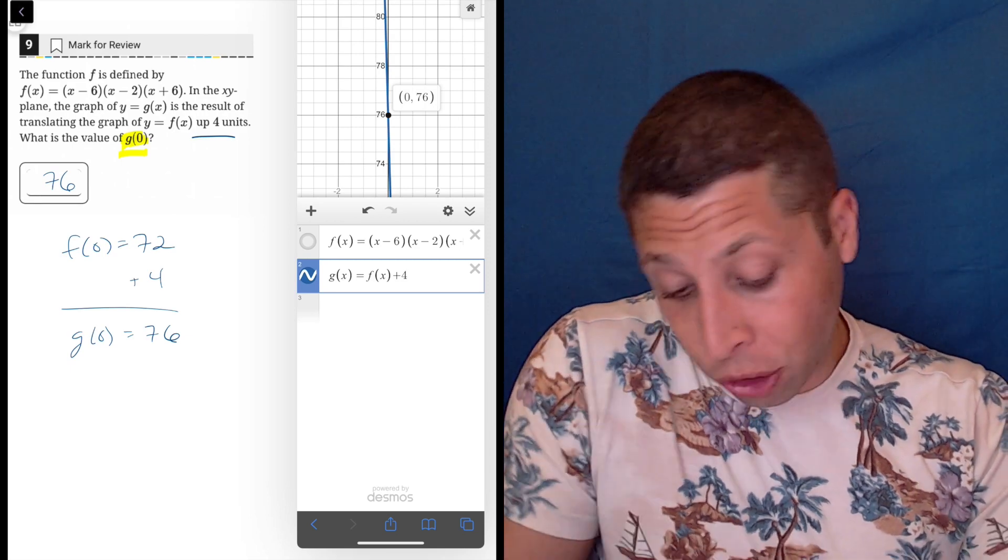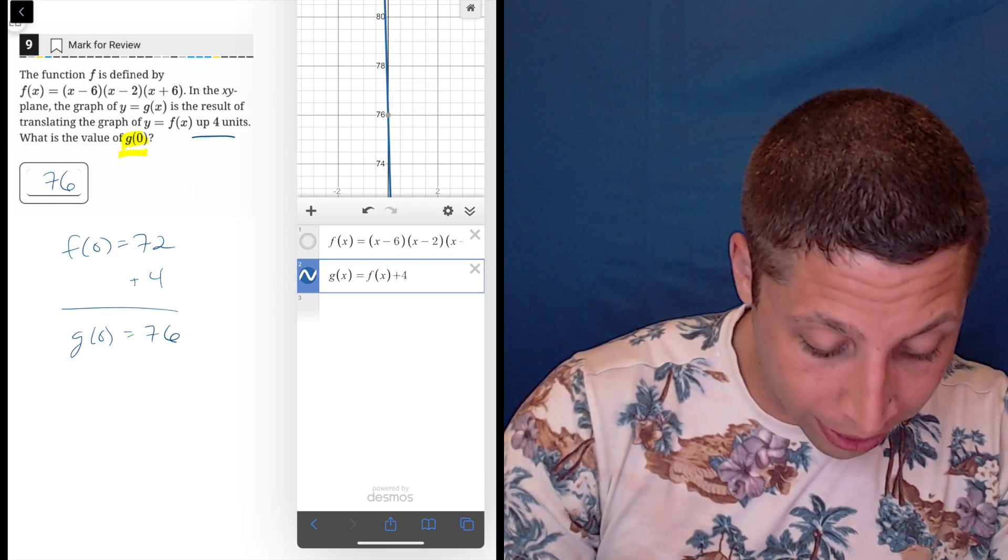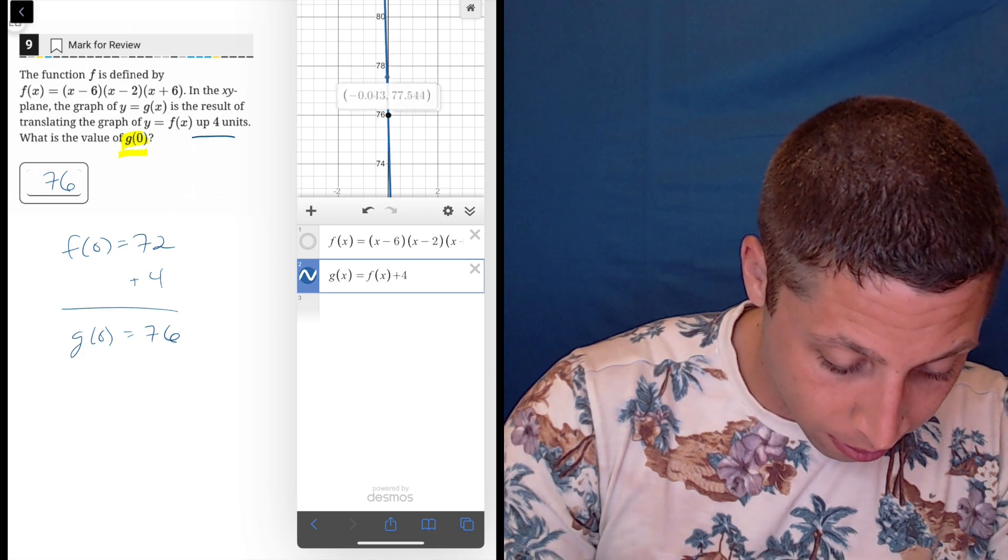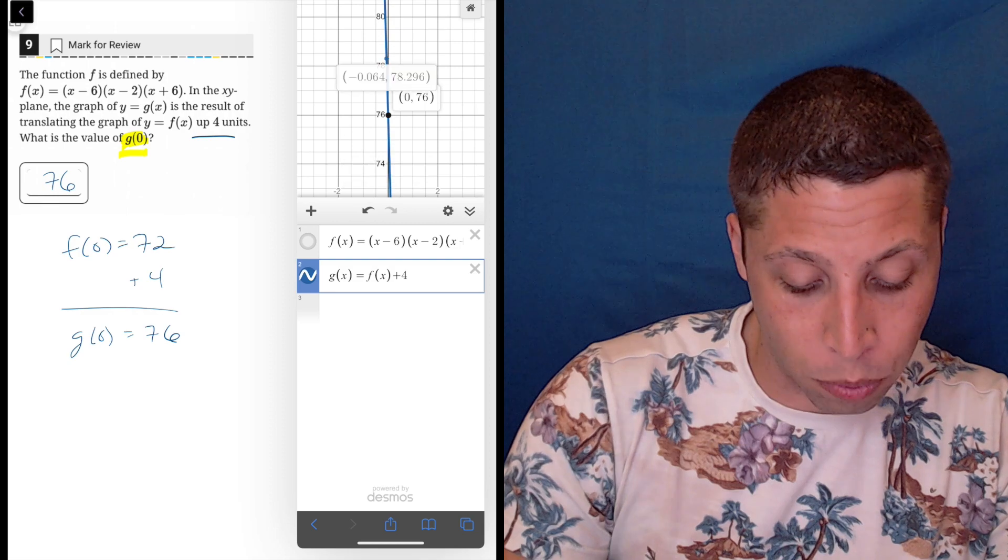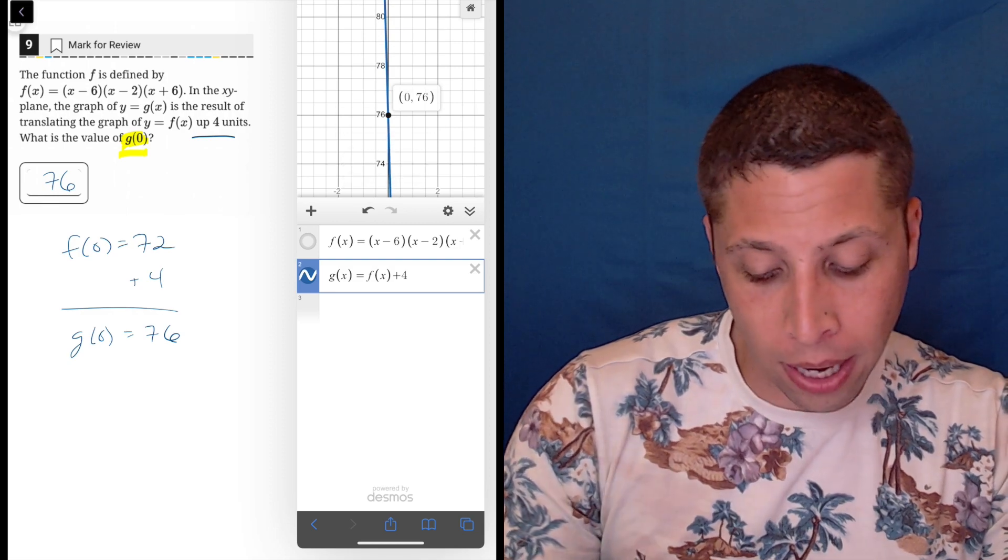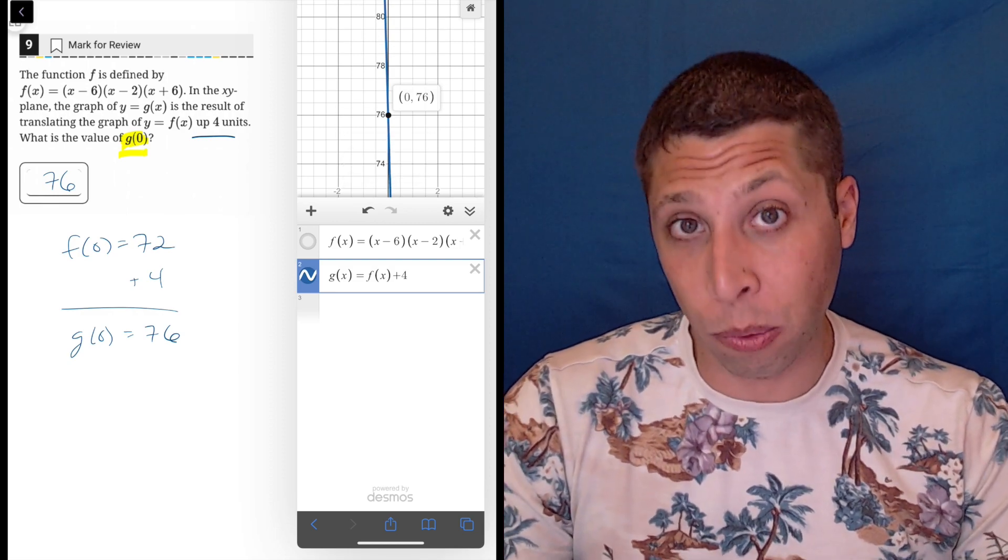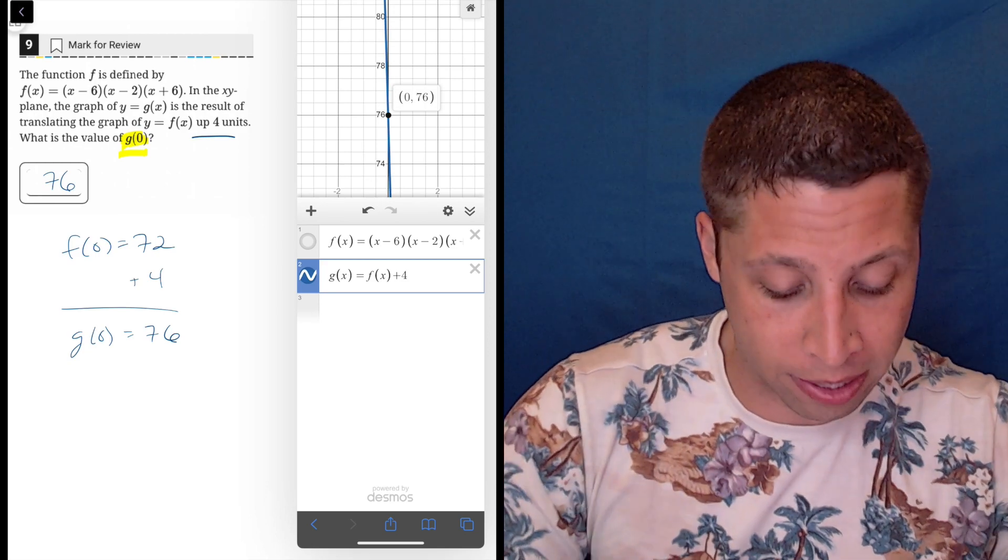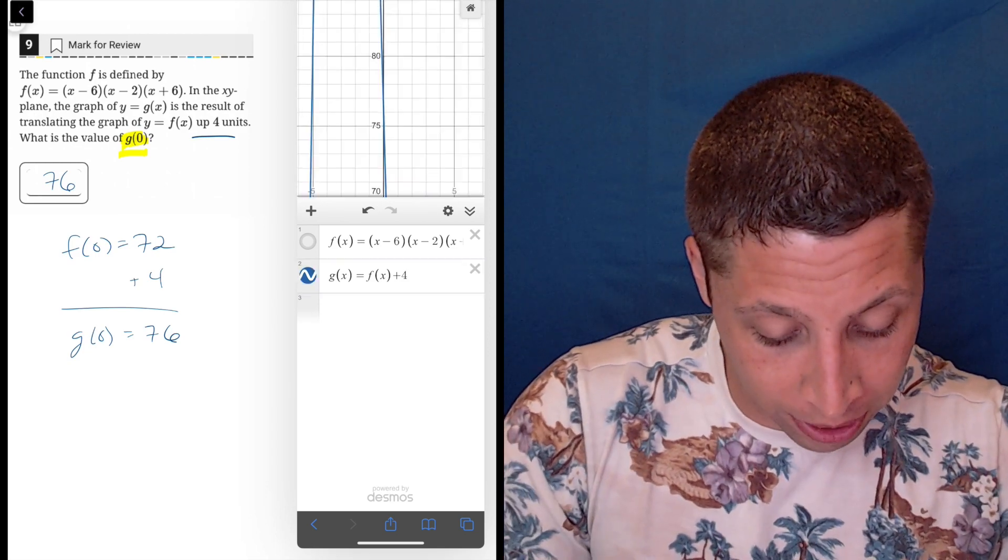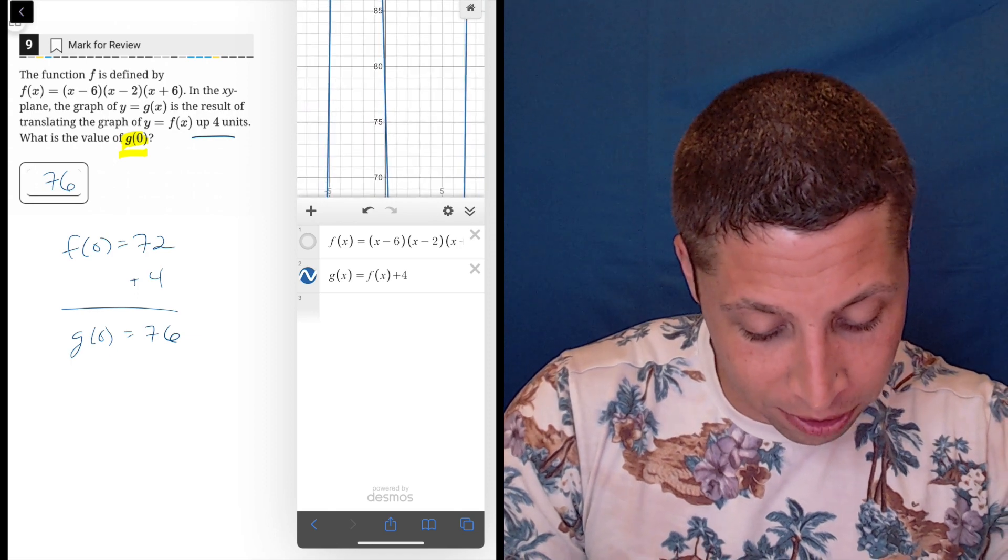If they wanted another point like g of 1 or something, that's a different story. We can kind of trace this thing. You can see my finger here tracing it, and that might work in a different situation where we're asked for a different point. But honestly, if they're asking for zeros, we're in good shape for any sort of graph because zeros are going to pop up on Desmos.